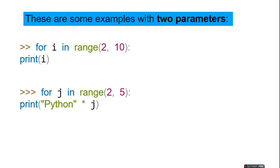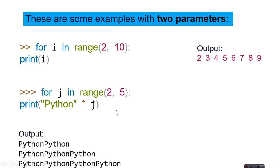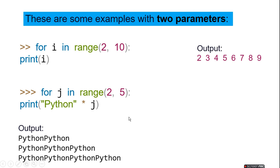These are some examples with two parameters which will tell you start and stop position. For i in range 2, 10, then it will print i and it will print 2 to 9. For j in range 2, 5, print python into j. So it will print python first time is 2, then 3, then 4.